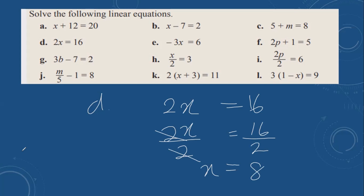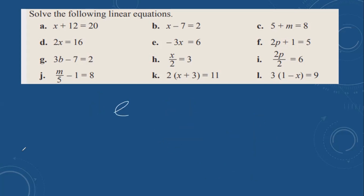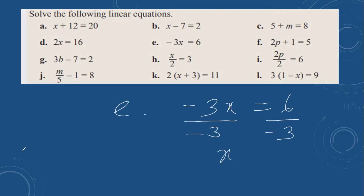Then next, e: minus 3x equals 6. So you can divide by minus 3. These two cancel out. x is equal to minus 6 divided by 3, which is 2. The answer is minus 2.